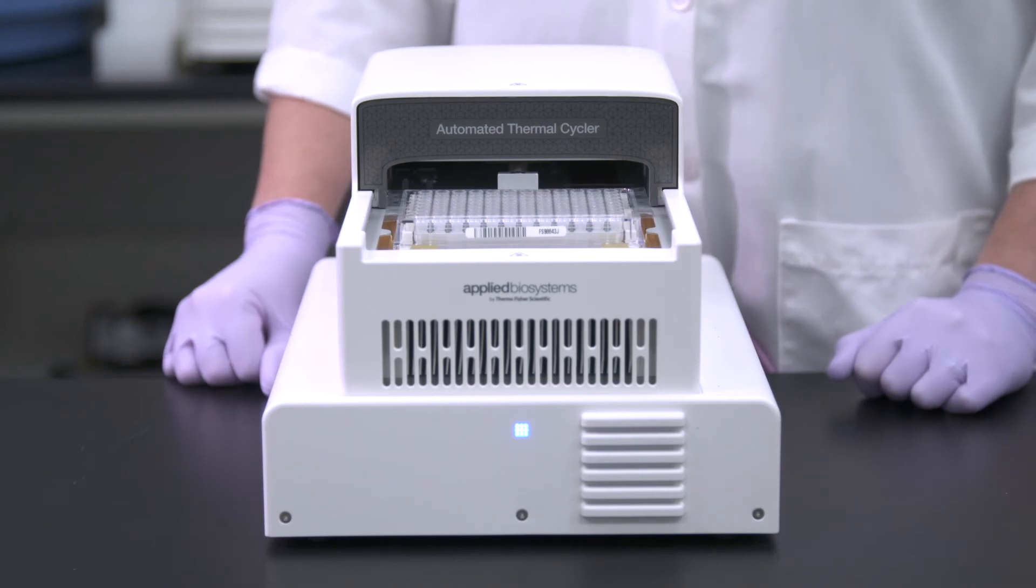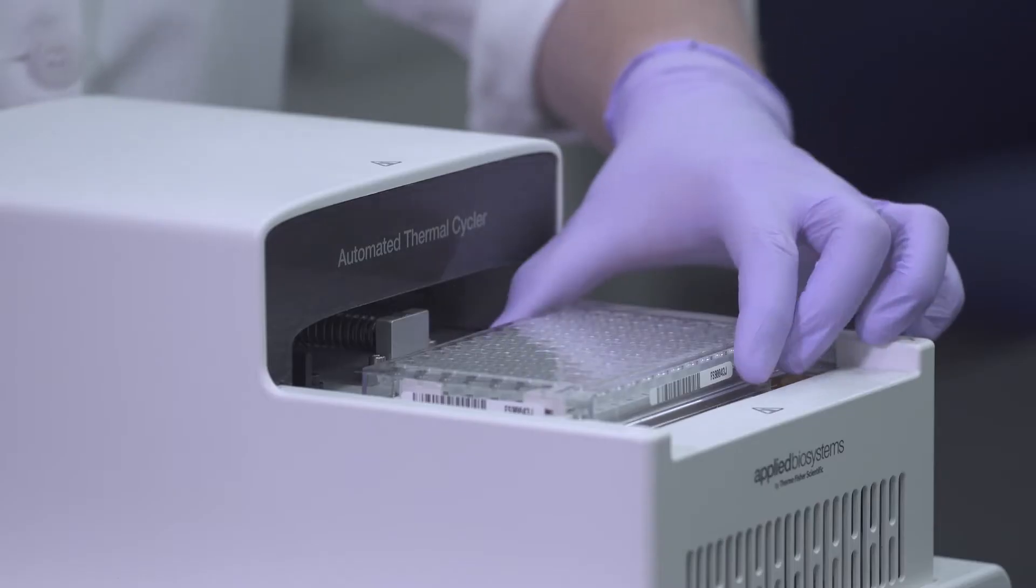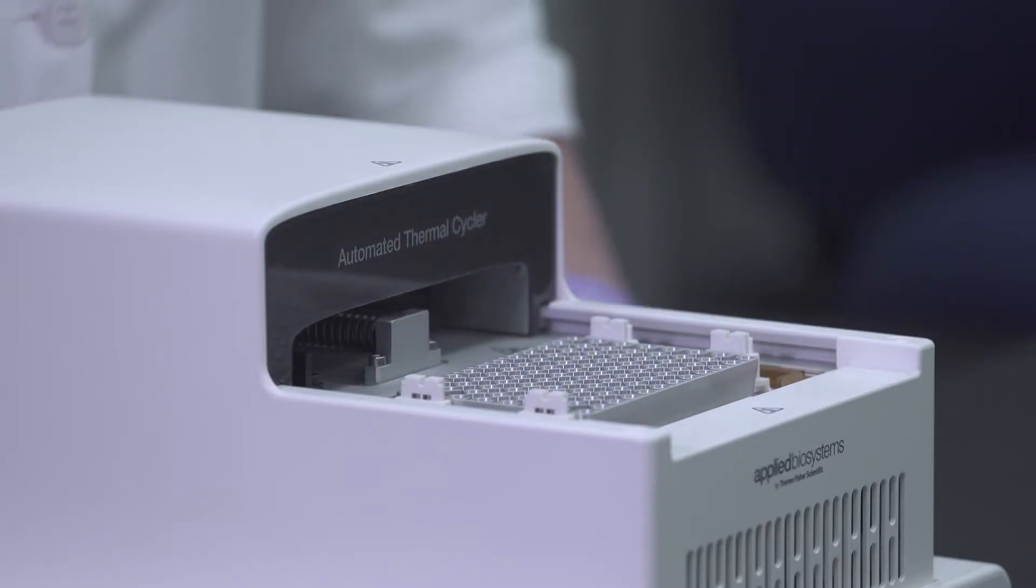The physical properties of polycarbonate also enable the plate to tolerate the fluctuating heating and cooling from thermal cycling that causes warping of standard polypropylene PCR plates.